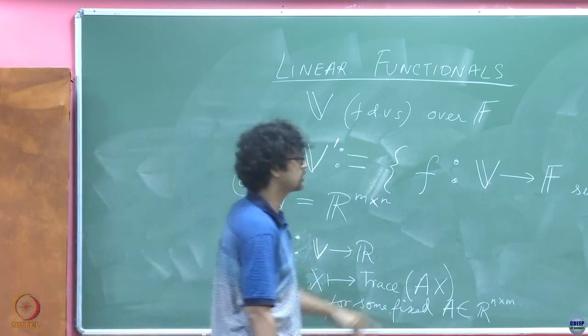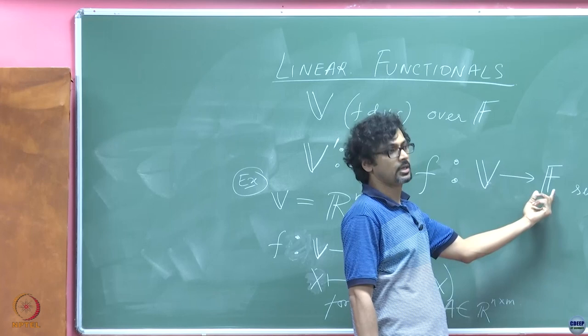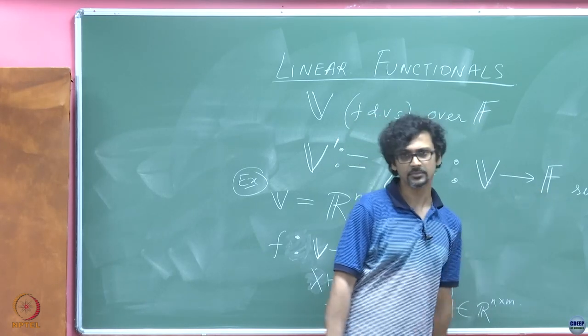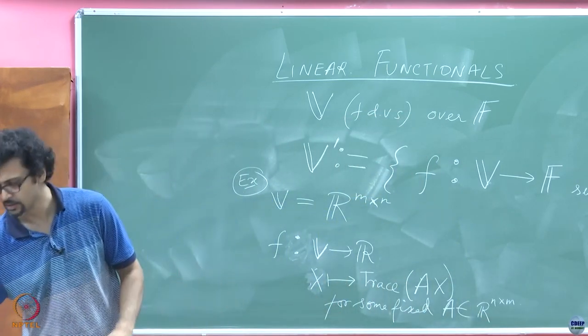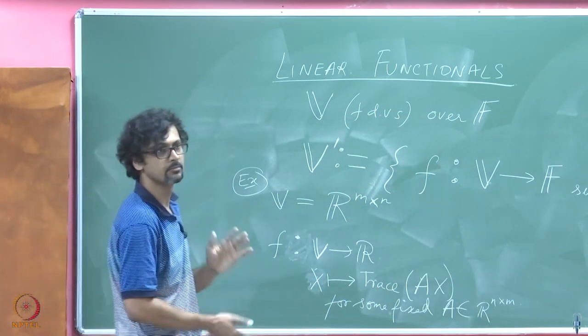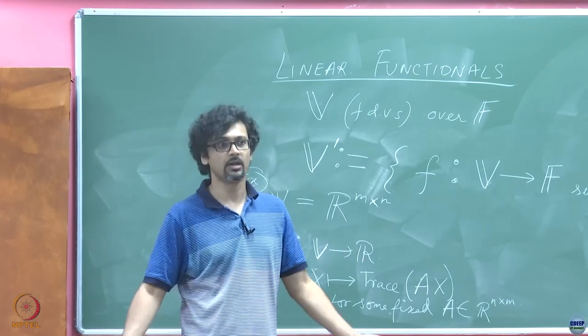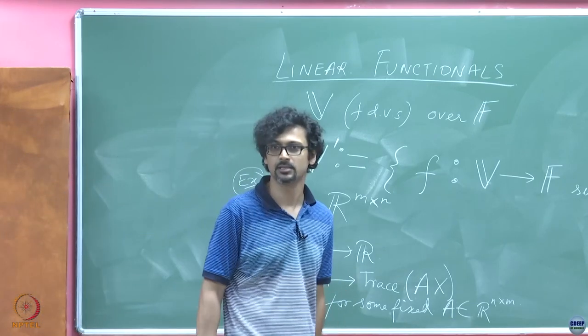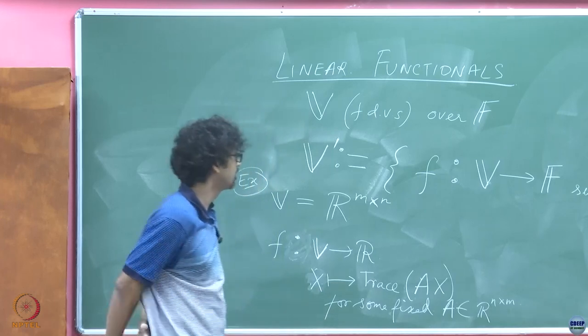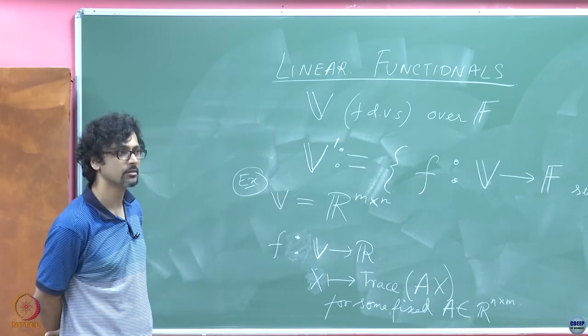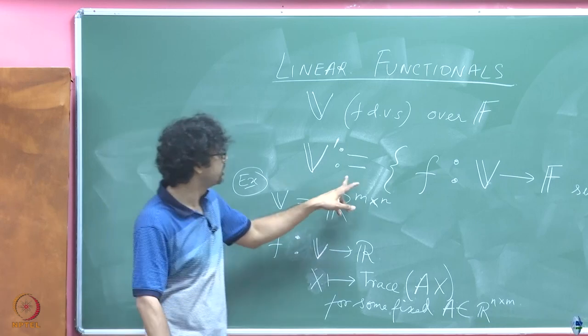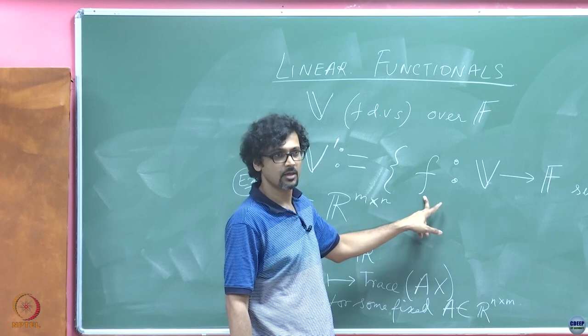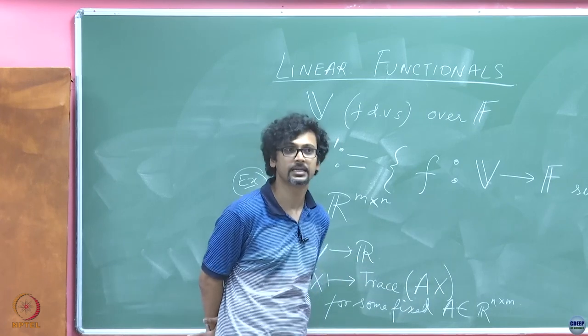But remember, it is a very special linear map. It is not just a map from any V to any W, but the W in this case is fixed, it is F. Now what is the dimension of F over F? Any field over itself? One. The multiplicative identity is a basis, is a standard basis, right? So if I apply the rank nullity theorem on objects inside this, what do you think I can get? What are the possibilities that can come up?